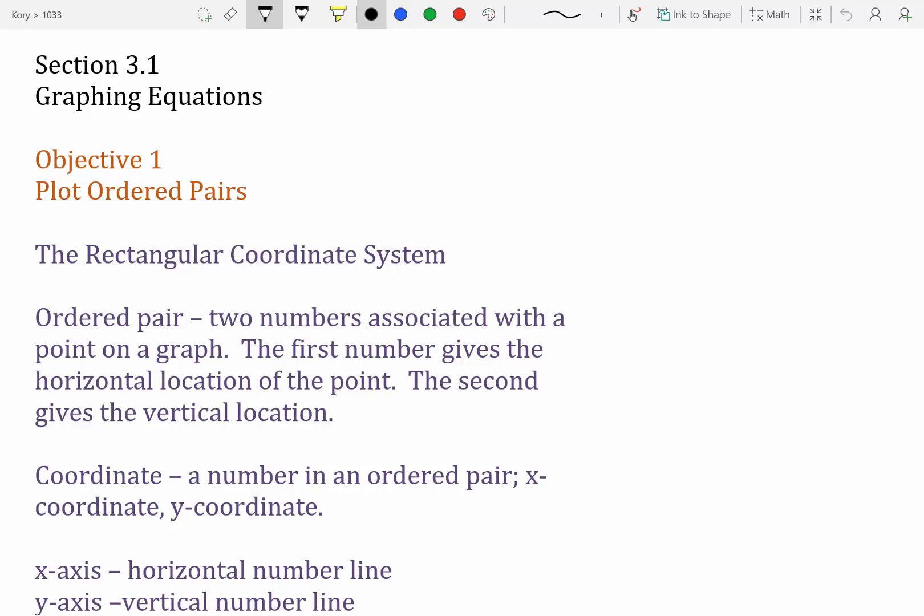The first number gives the horizontal location of the point. The second gives the vertical location. So the horizontal is the x. The vertical is the y.